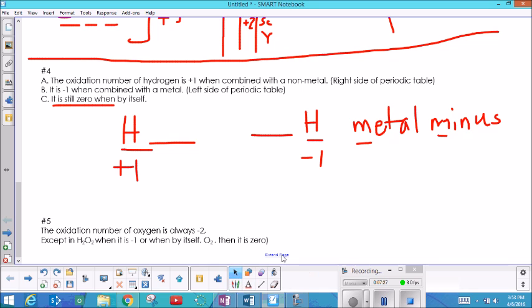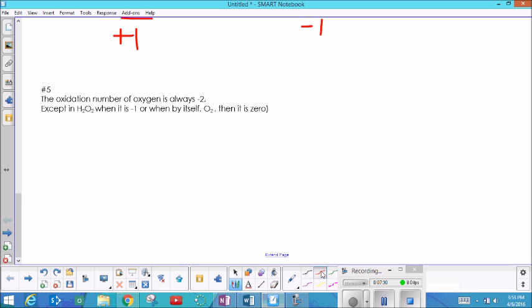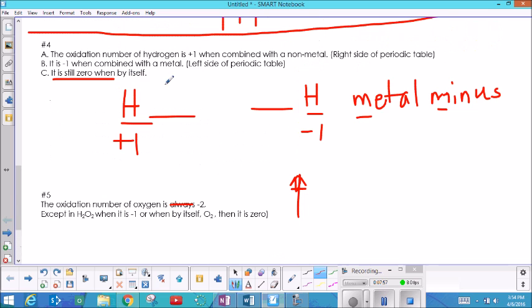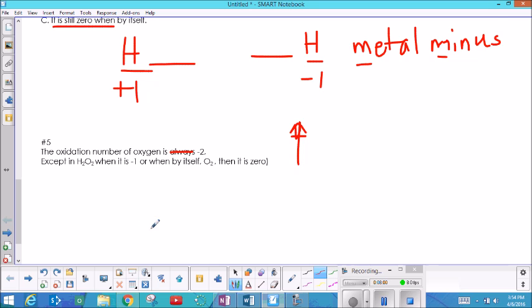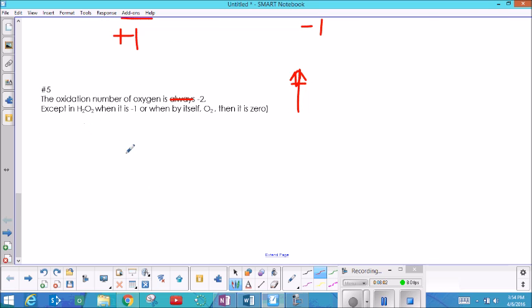Rule number five is talking about oxygen. It says here always two, and it's always two except when it's not. So I'm just going to say it's a negative two and know that when it's not a negative two, it's going to be when one of the rules above here had a conflict. They give you an example here of H2O2.